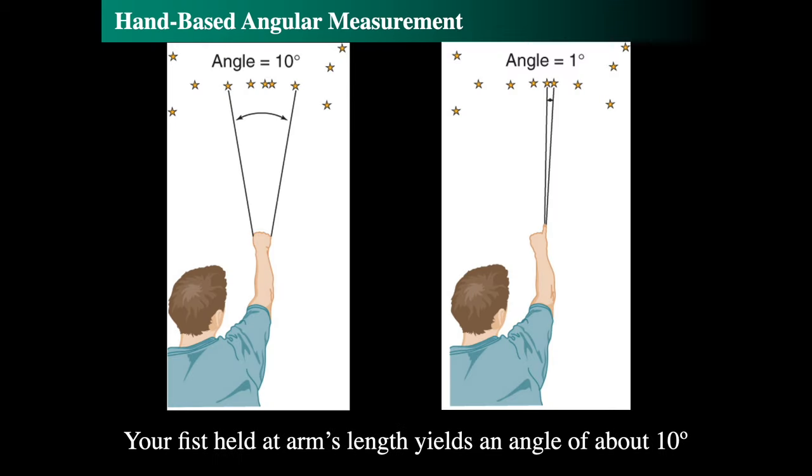Next, we can define angular measurement using a very simple tool, our hand. If you take your hand at arm's length and make a fist, close one eye and hold it up on a dark night where you can see many stars, and put one star on the right side of your fist and one star on the left side, those stars will be roughly 10 degrees apart.